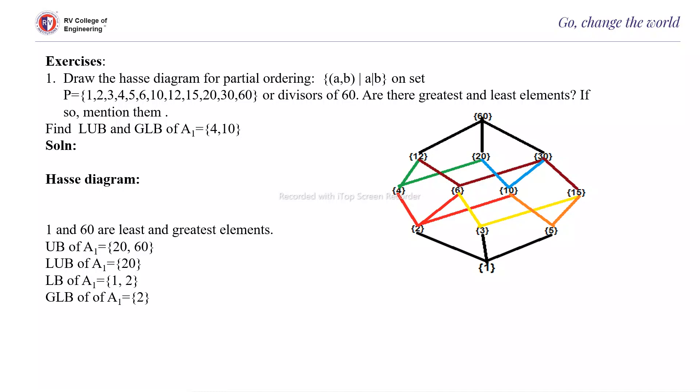Then are there greatest and least elements? If so, mention them. Find LUB and GLB of the subset A₁ = {4, 10}.